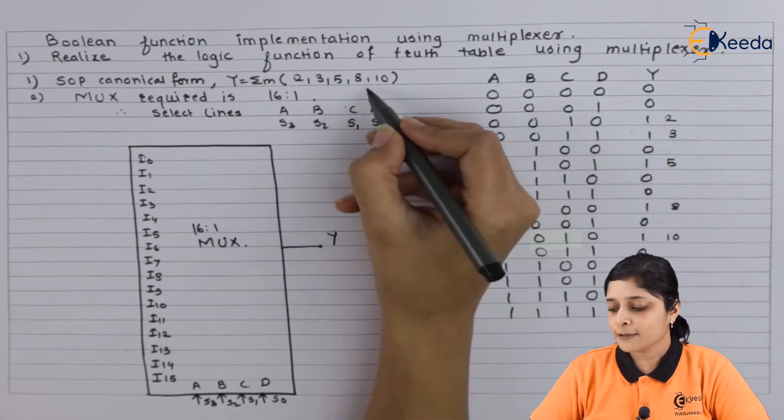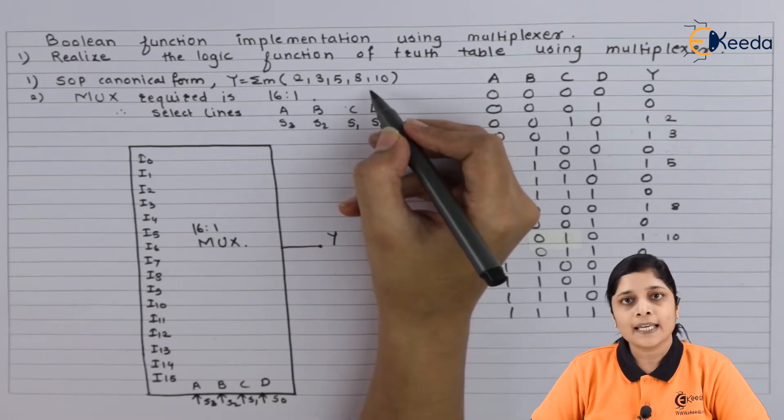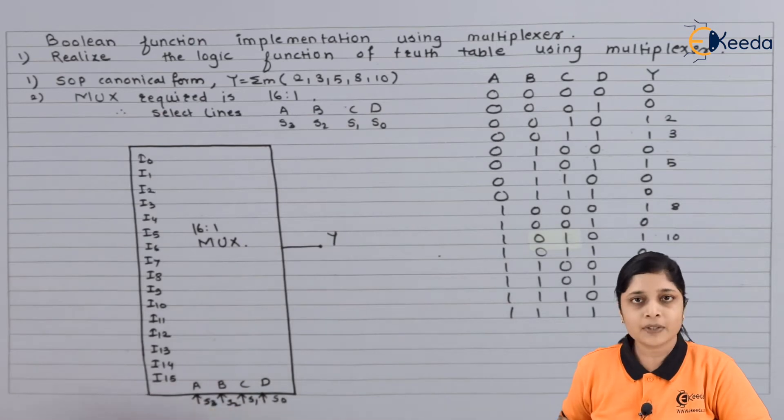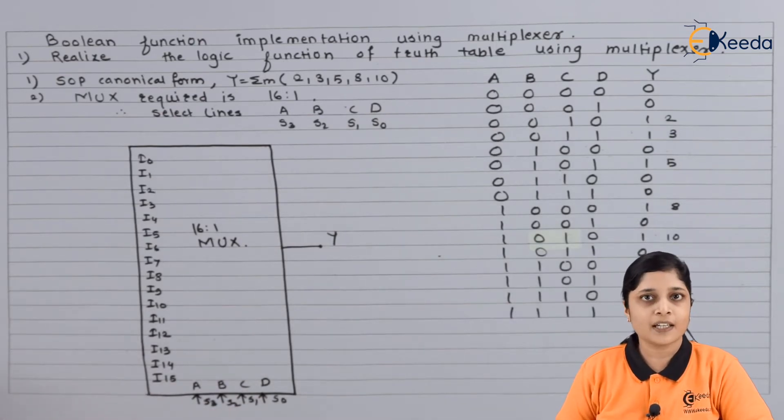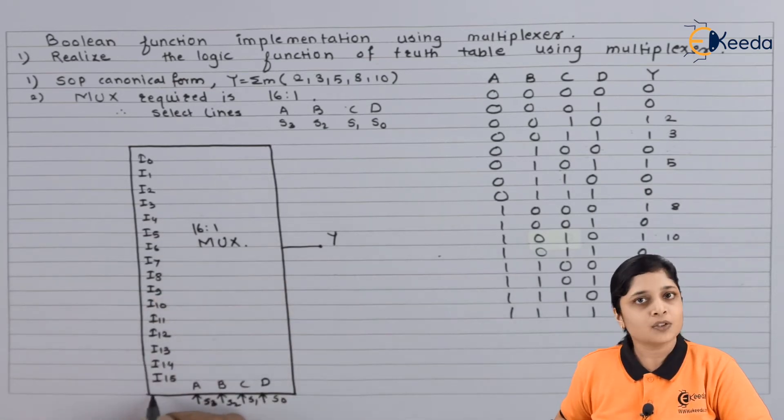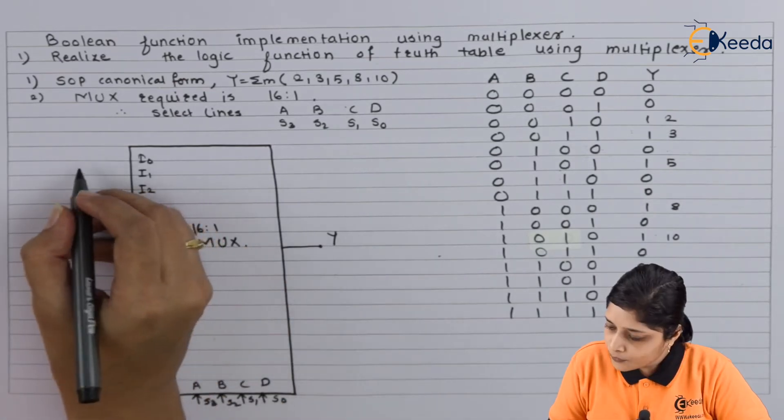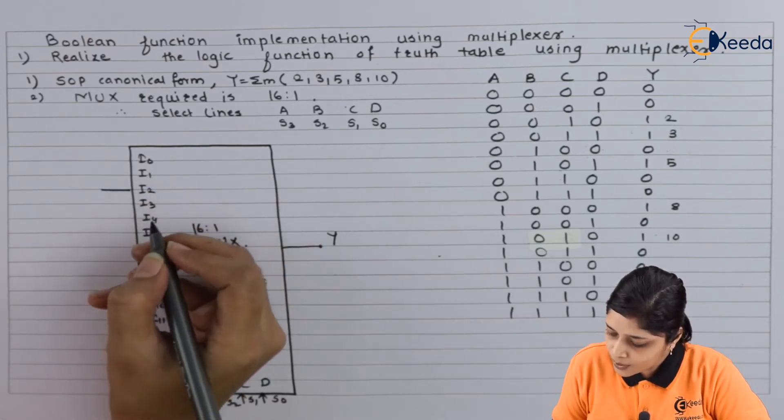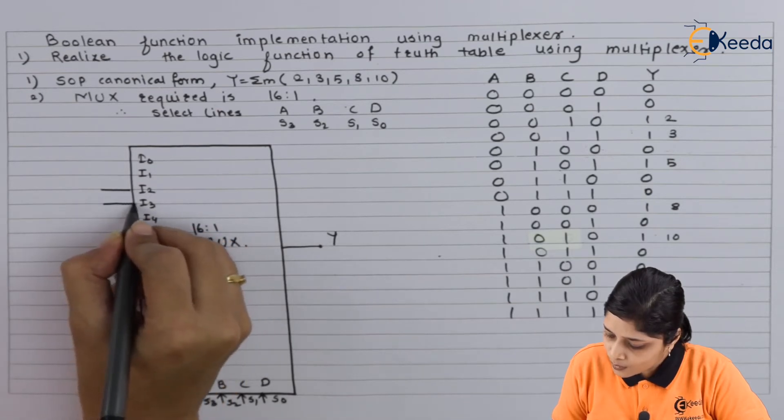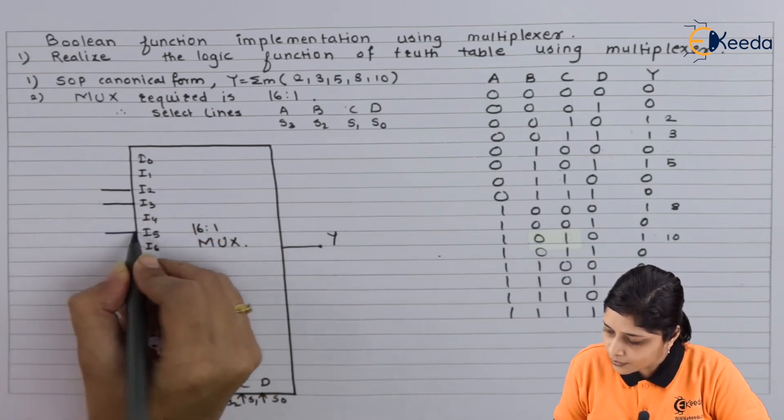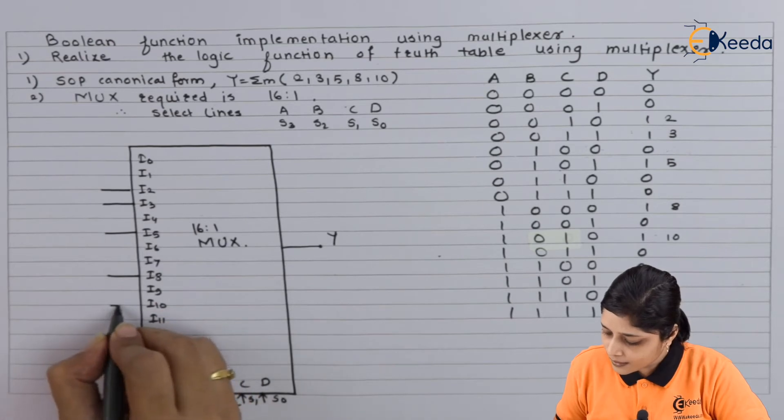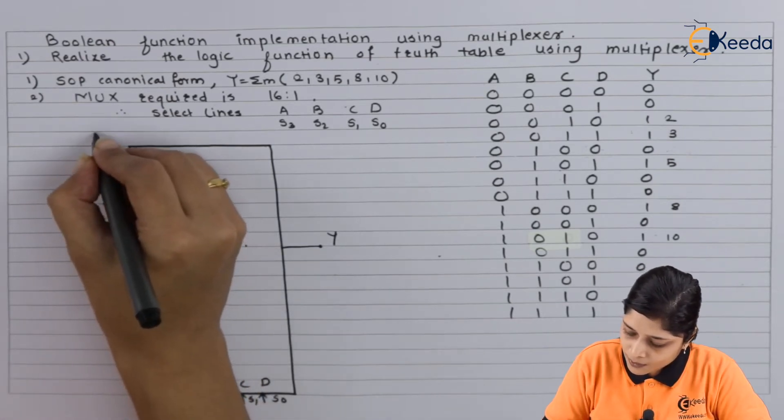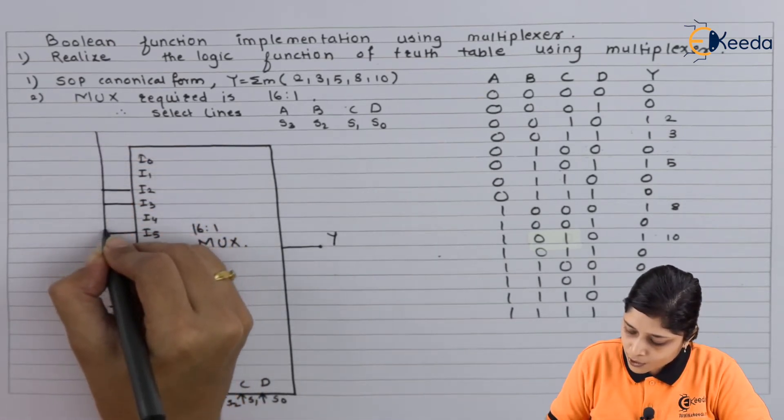Now the logic is: connect all the minterms in the canonical SOP form to logic 1. Here the enable terminal is by default there and you can connect it to logic 1. If you are not mentioning enable, it is okay. Now you have to connect I2, I3, I5, I8, and I10 to logic 1.